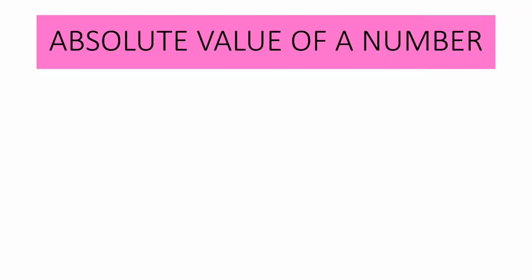Let us have more examples of the absolute value of a number. Now simplify the following. Before we proceed, let us recall the definition: the absolute value of a number is the distance of a number from zero on a number line, regardless of the direction. In other words, since we are talking about distance, when we get the absolute value of a number, we are getting the positive value.